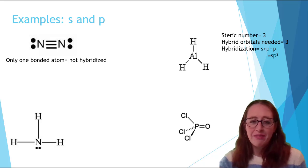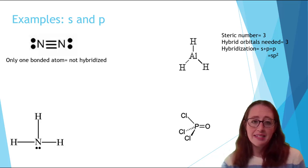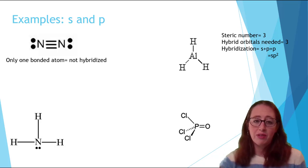Next up, we have AlH3. It has a steric number of three. We're just talking about the central element. We're just talking about the Al. The hybrid orbitals needed is therefore three. This means that the hybridization is SP2, because you have one S, two Ps, that equals three orbitals, SP2.